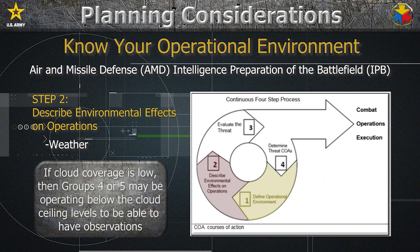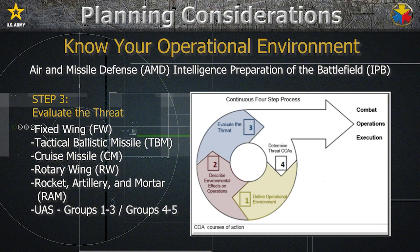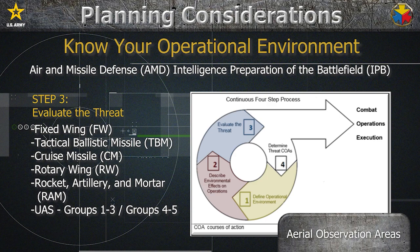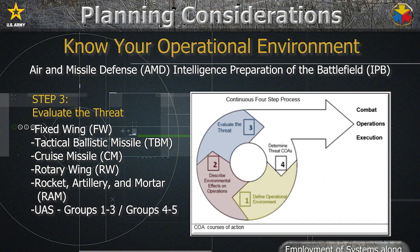Additionally, if cloud coverage is low, Groups 4 and 5 may be operating below the cloud ceiling levels in order to have observation. Step 3 is to evaluate the threat. AMD IPB will focus on likely aerial observation areas, likely areas of munitions release, likely fields of fire for air defense systems, and critically analyzing the employment of systems along with the most likely air avenues of approach. We recommend you break down the threats as seen on this slide.